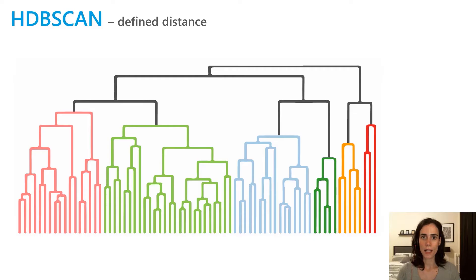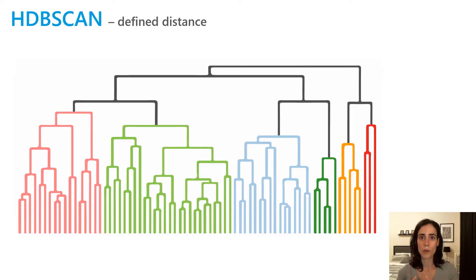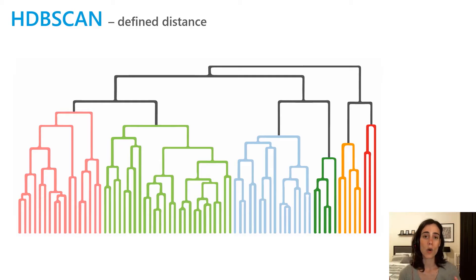HDBSCAN, on the other hand, still has a set core distance but the search distance is allowed to adjust depending on the data. It's a truly data-driven, self-adjusting method, so you find clusters of varying densities. The only parameter you can set is the minimum features required to form a cluster — everything else is data driven.